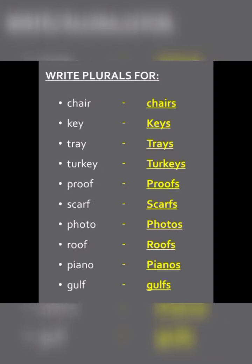Chair becomes chairs (c-h-a-i-r-s). Key becomes keys (k-e-y-s). Tray becomes trays (t-r-a-y-s). Turkey becomes turkeys (t-u-r-k-e-y-s). Proof becomes proofs (p-r-o-o-f-s). Scarf becomes scarfs (s-c-a-r-f-s). Photo becomes photos (p-h-o-t-o-s). Roof becomes roofs (r-o-o-f-s). Piano becomes pianos (p-i-a-n-o-s). Gulf becomes gulfs (g-u-l-f-s). Final list: chairs, keys, trays, turkeys, proofs, scarfs, photos, roofs, pianos, gulfs.